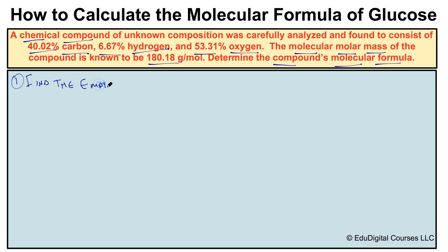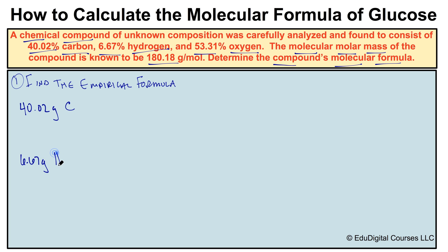The first thing we're going to do is find the empirical formula. We'll assume we have a 100-gram sample of this compound. If 40.02% of its mass is carbon, we have 40.02 grams of carbon. If 6.67% is hydrogen, we have 6.67 grams of hydrogen. And if 53.31% is oxygen, we have 53.31 grams of oxygen.